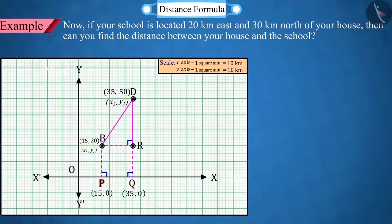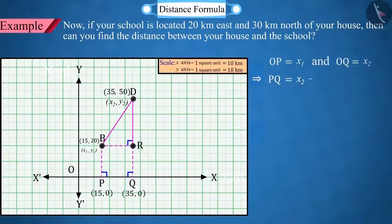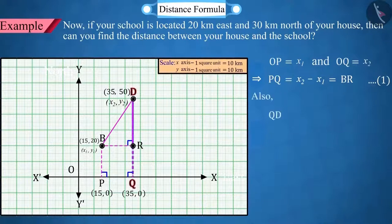Here, OP equals x1, OQ equals x2. So, PQ equals x2 minus x1, which is equal to BR. And looking carefully at the graph, QD equals y2 and QR equals y1, which is equal to PB.